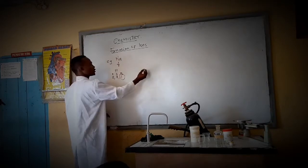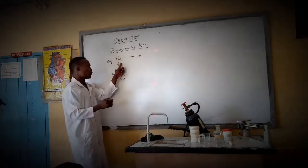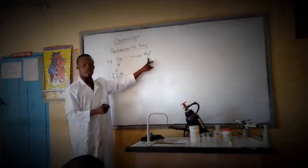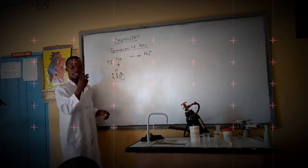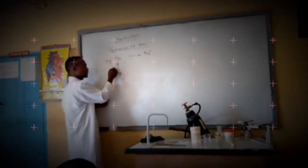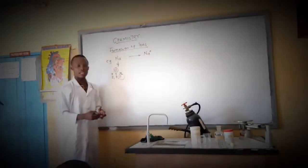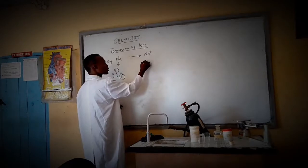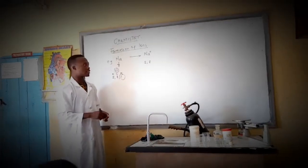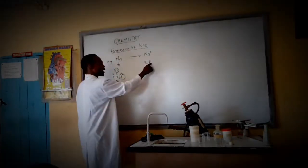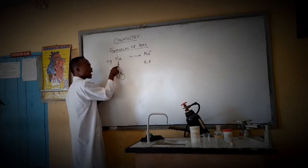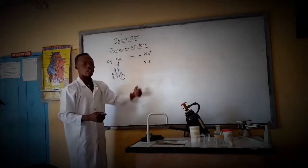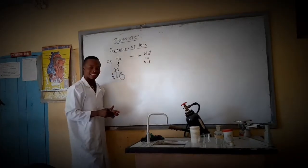Sodium loses the 1 electron and turns into a sodium ion. The original sodium has 11 electrons (2, 8, 1), while the sodium ion now has only 10 electrons (2, 8), which is balanced. That is why we call it an ion — it is now balanced.